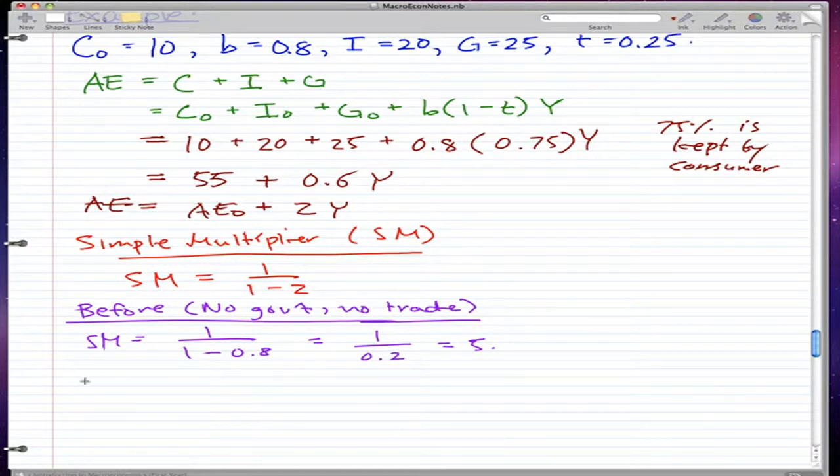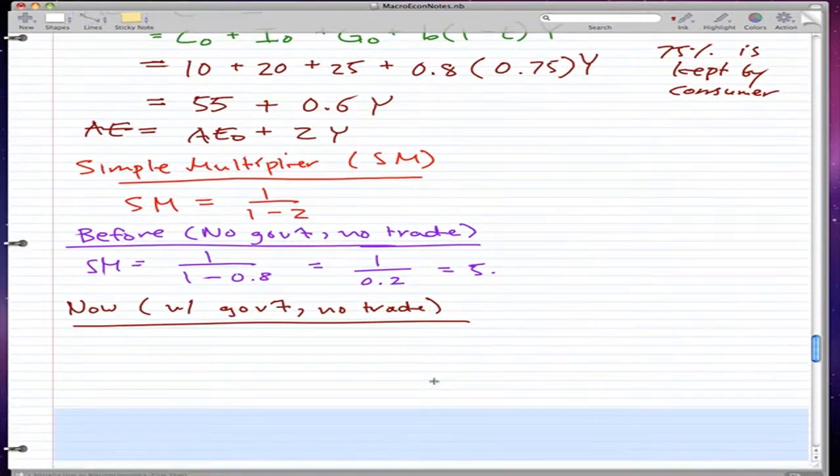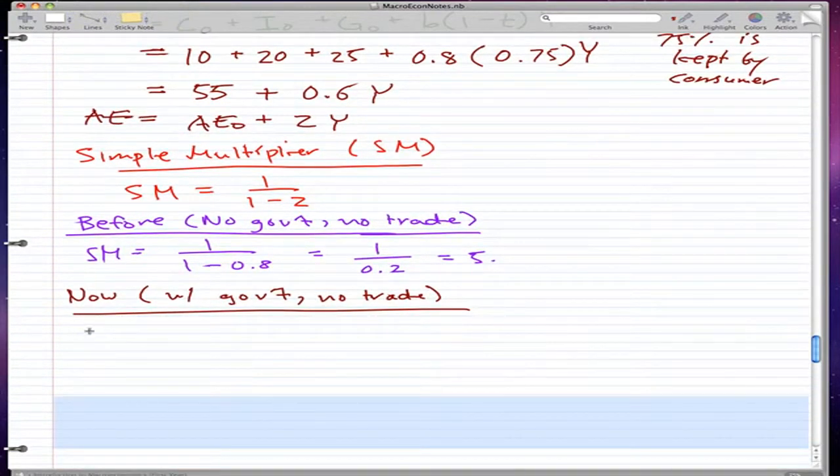Now, with government, but still no trade, now we're going to do the simple multiplier for this situation. So, the simple multiplier for this situation is 1 over 1 minus 0.6.